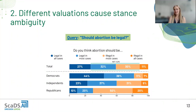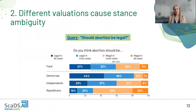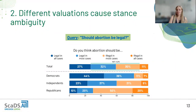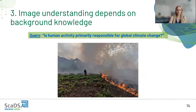The second key challenge is that different people have different valuations and may see an image differently depending on their political views, nationality, or other factors, causing stance ambiguity. For example, with the query 'should abortion be legal,' an image showing that most Democrats support it while most Republicans do not could be a pro argument for someone aligned with Democratic views but not for others.